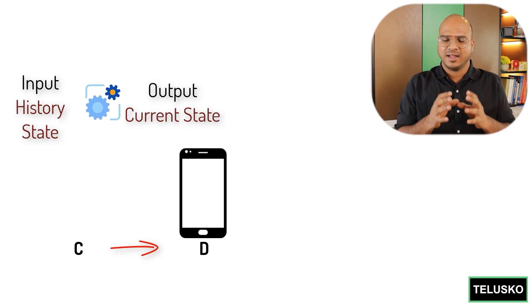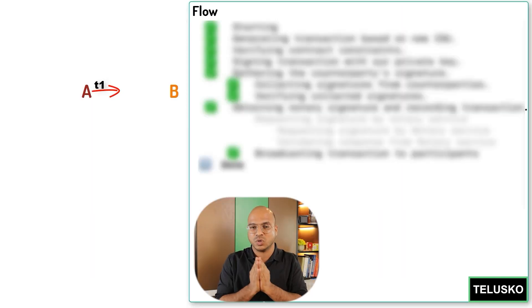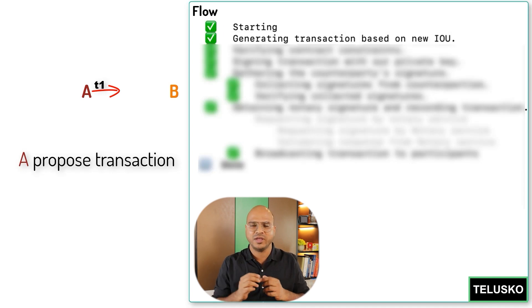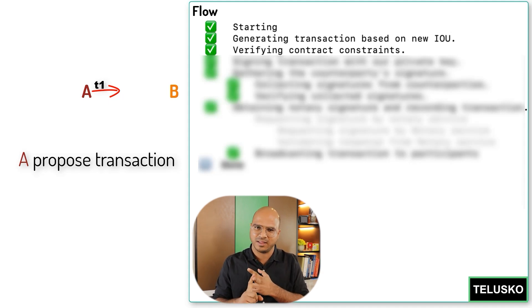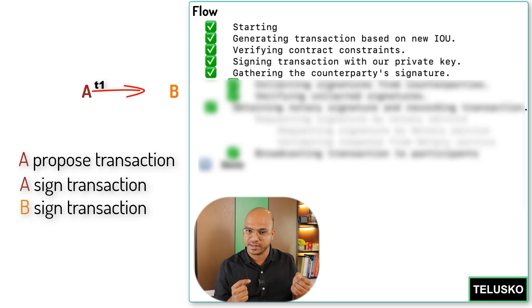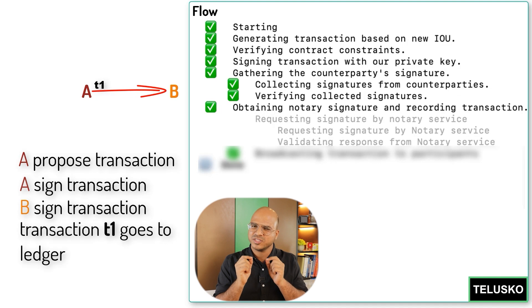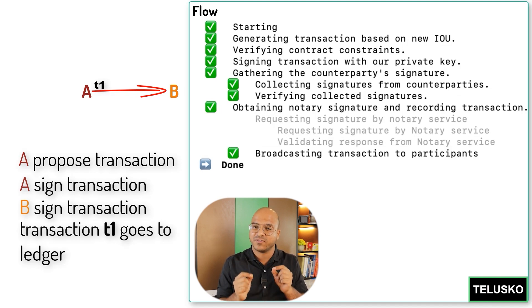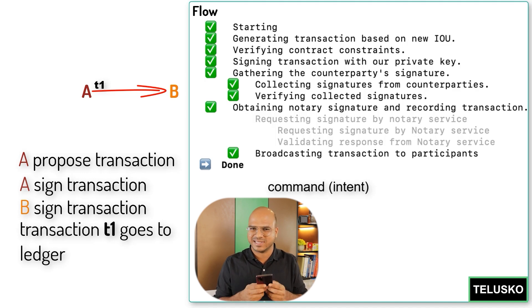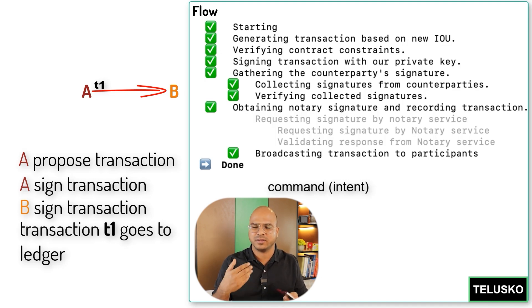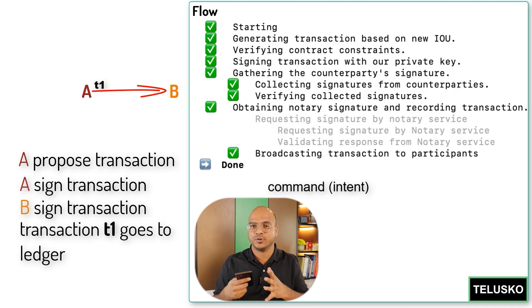Whenever you want to update the ledger, you have to do transactions. When A wants to do a transaction, A will propose a transaction. Transactions are atomic — they will either pass or fail. So when you propose a transaction, you have to sign it, then B will sign it, and then it goes to the actual ledger. Whenever you do a transaction, you also have to specify your intention — for example, sell, send, or create. This intention, called a command, is helpful when you do contracts.